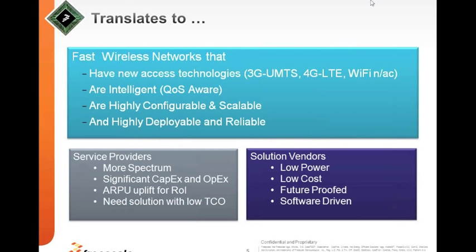Networks have to be intelligent, with a lot of quality of service requirements — low-latency, high-speed, rate-sensitive traffic like video. All these things have to be accounted for, and user profiles are pretty diverse. Networks need to be highly configurable and scalable, mainly because many access points need to be deployed to meet this kind of data traffic demand.